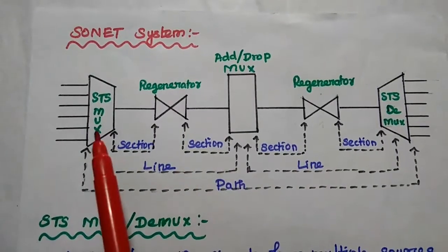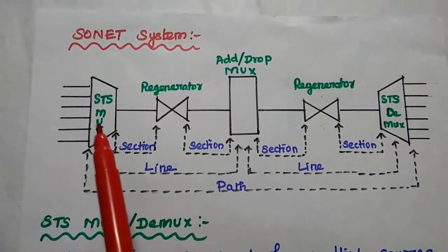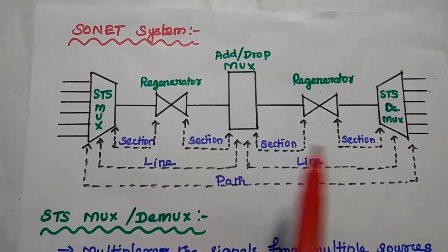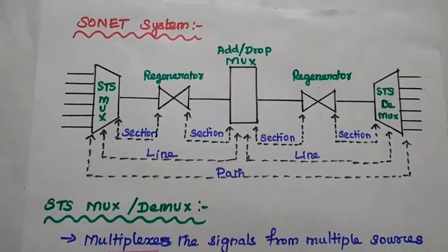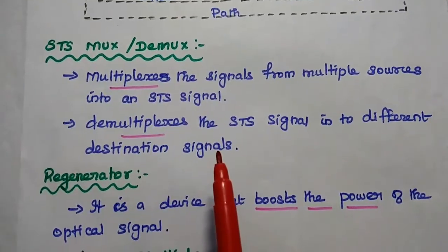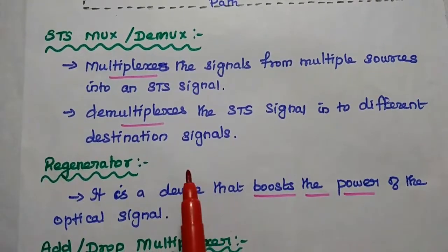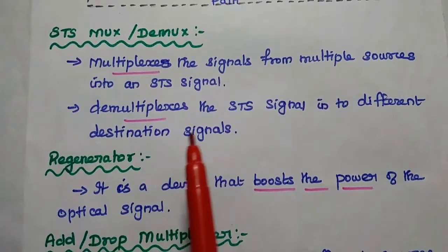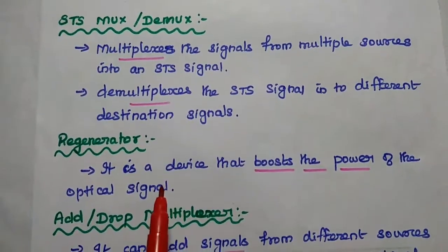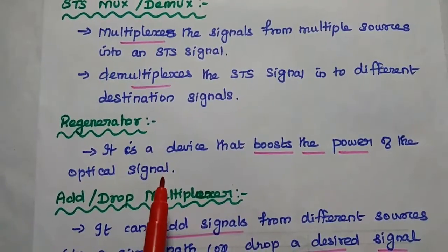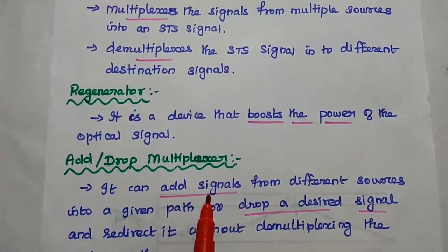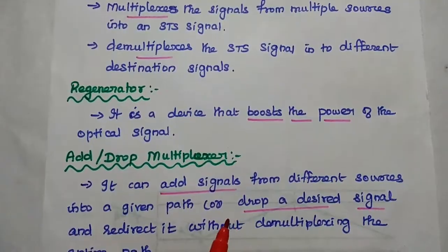A line is the link connecting two SONET devices — for example, STS multiplexer to add/drop multiplexer, or add/drop multiplexer to STS demultiplexer. A path is the end-to-end connection. The add/drop multiplexer is an important component: it can add signals from various sources into a given path as well as drop a desired signal and redirect it to the destination without demultiplexing the entire path.